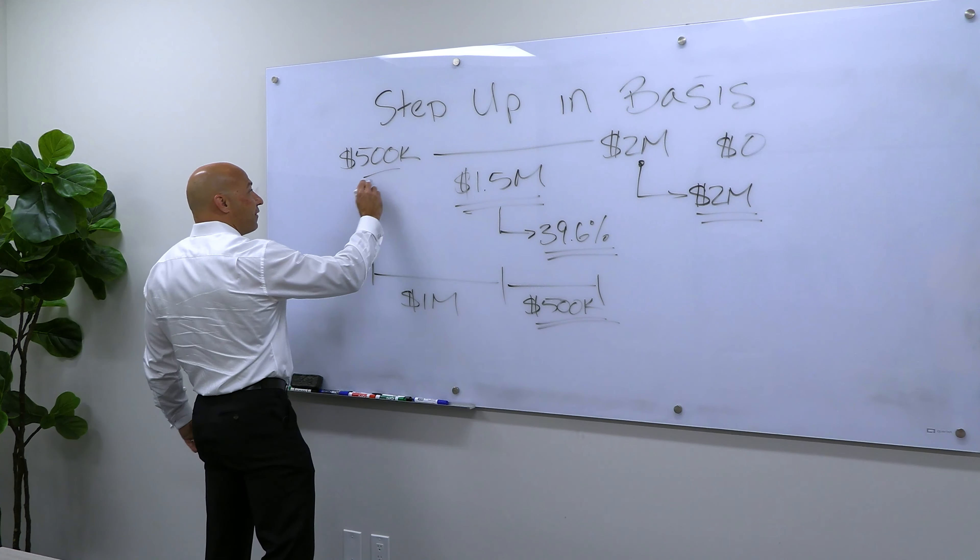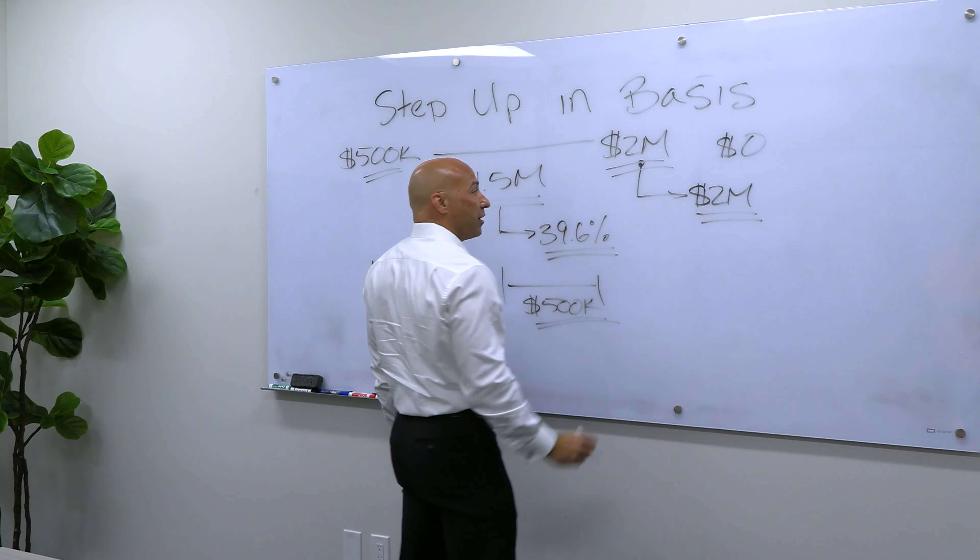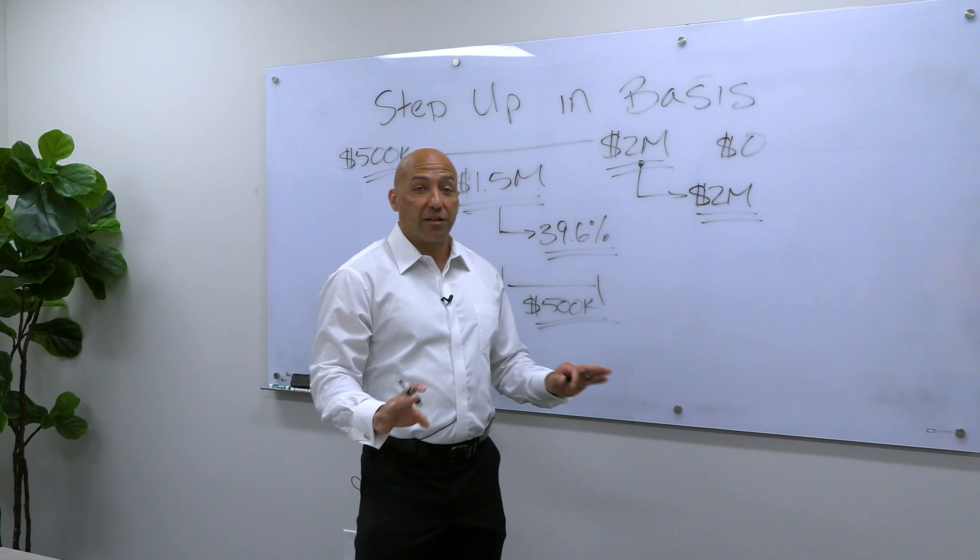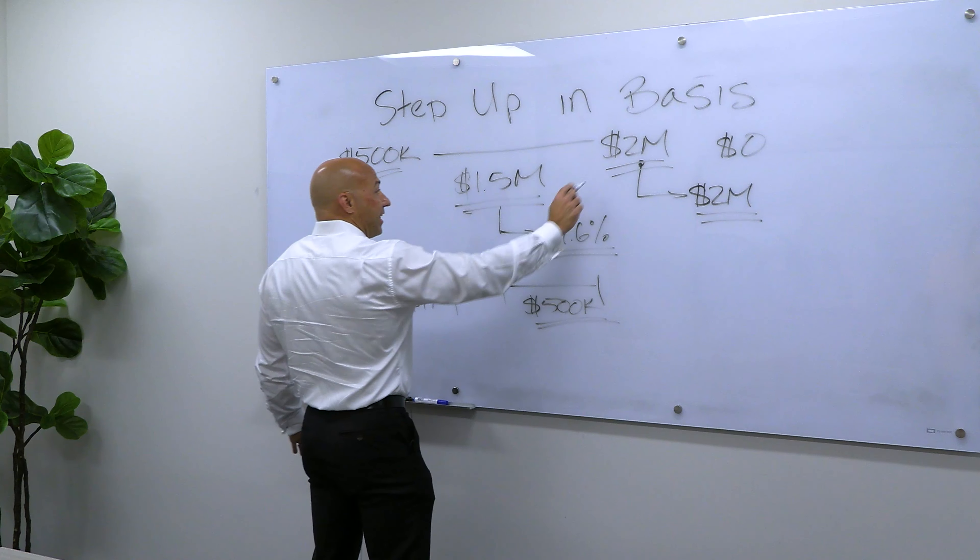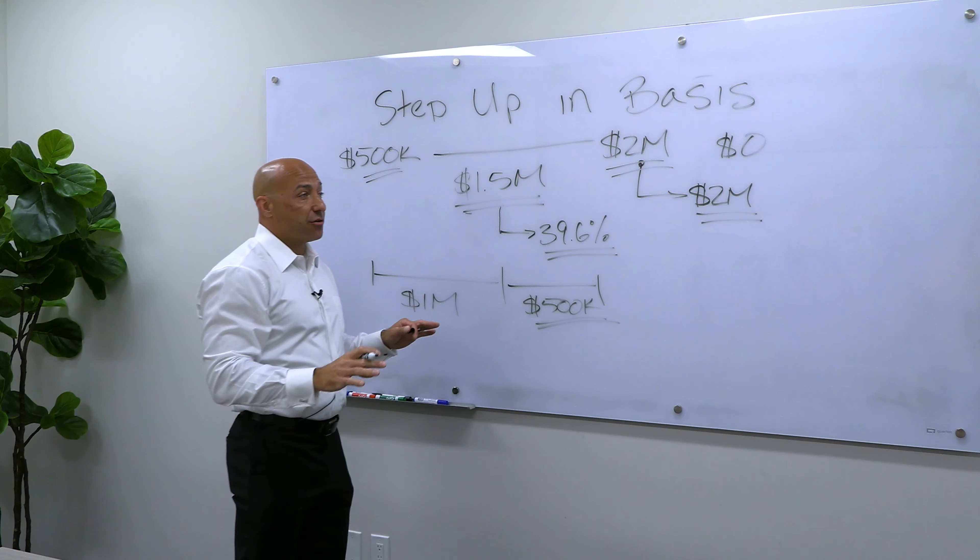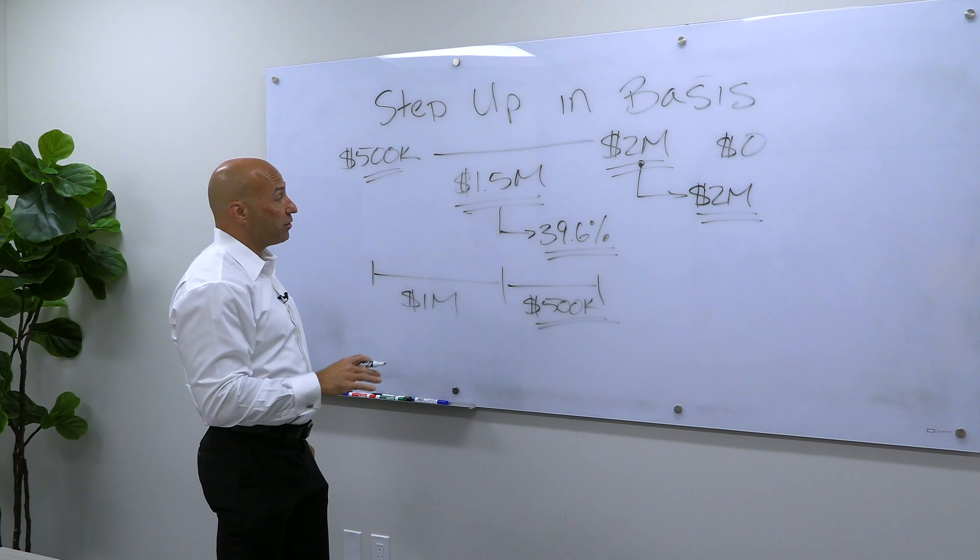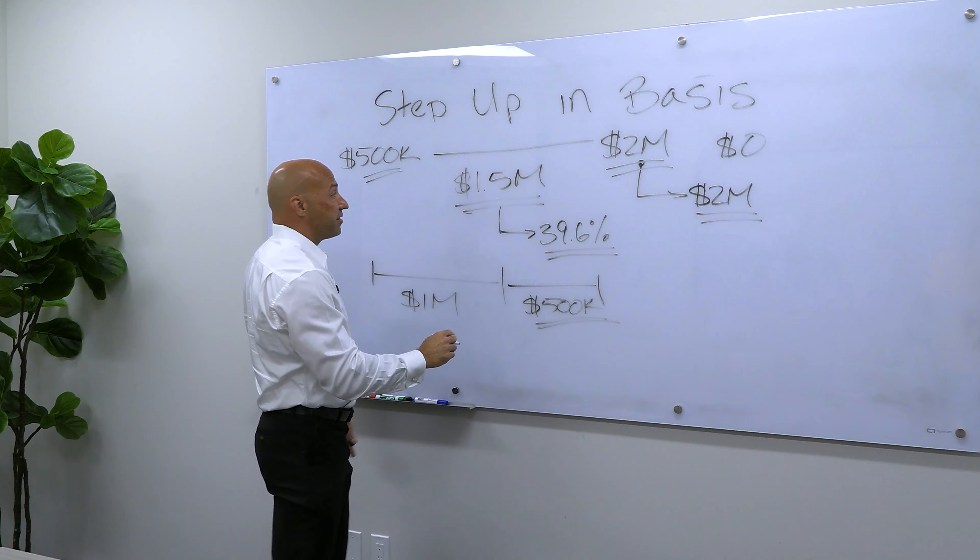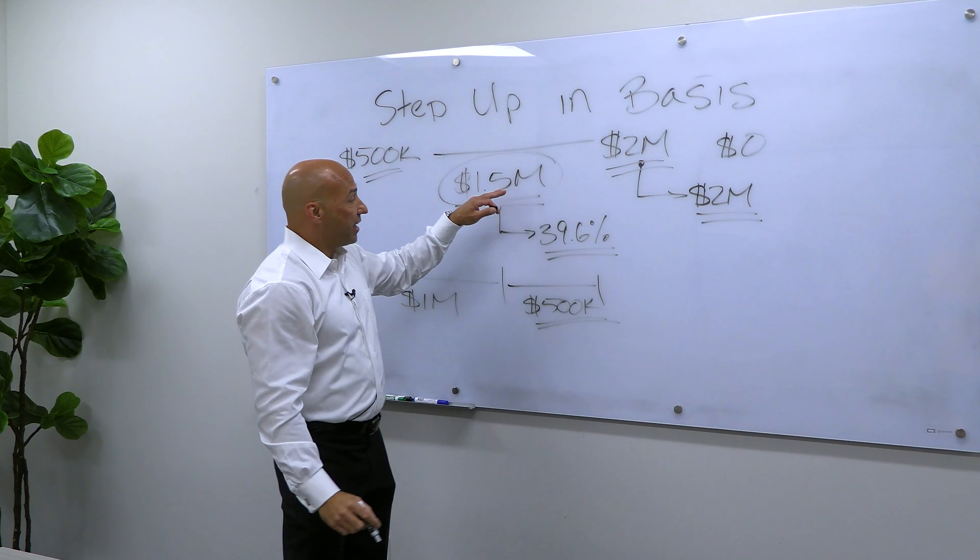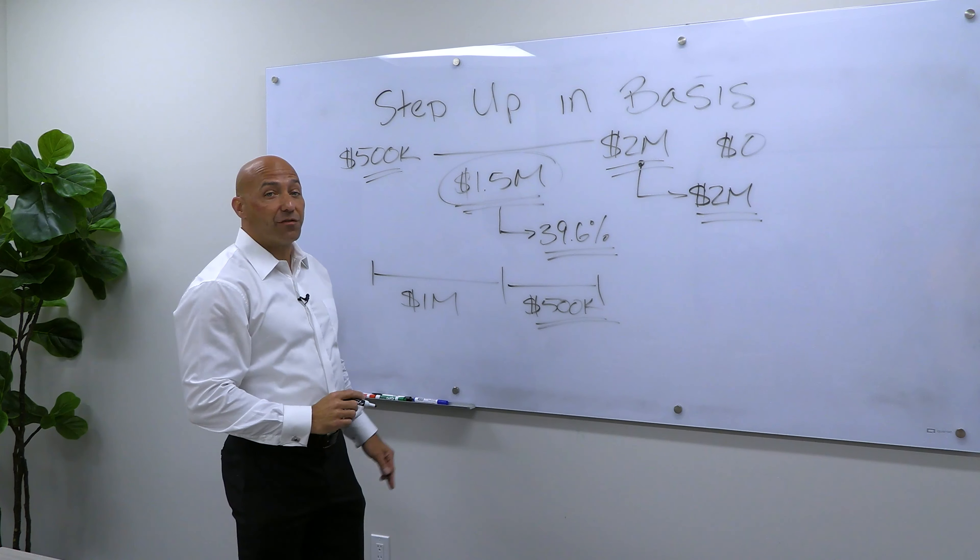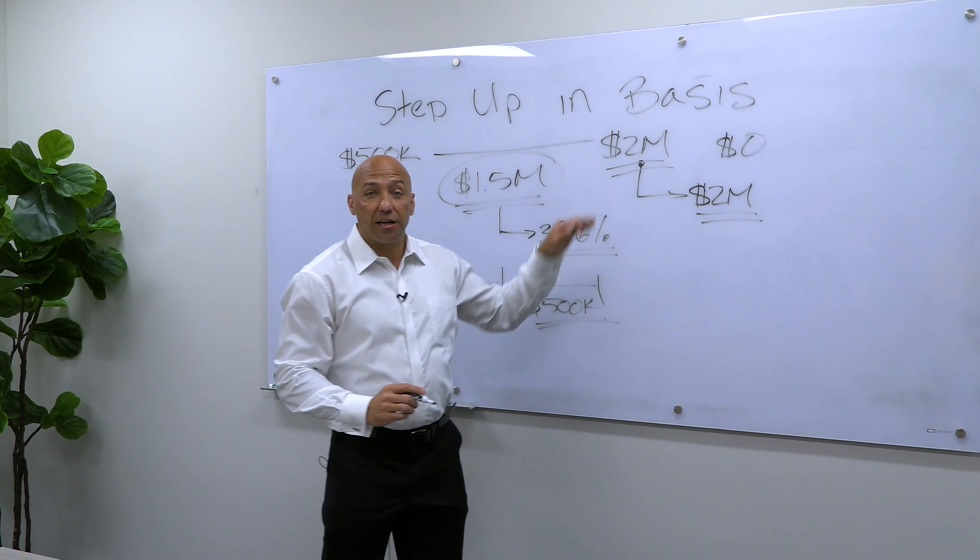What that means is I buy the house for $500,000, at my death it's worth $2 million. My kids don't want to sell the property. They want to hold onto it. At that time, it would generate an unrealized tax or capital gain that you would owe taxes on.